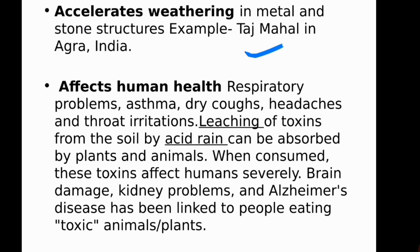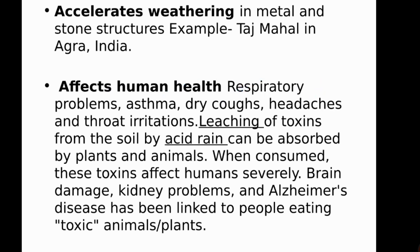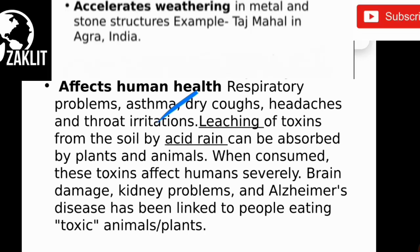Acid rain also affects human health. Respiratory problems like asthma, dry coughs, headaches, and throat irritations are seen in areas where acid rain occurs. Leaching of toxins from soil can be absorbed by plants and passed from one trophic level to another. Serious damages include harm to the brain, kidney problems, and Alzheimer's disease, linked to people consuming toxic animals and plants.